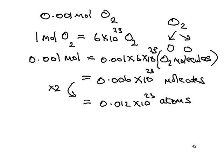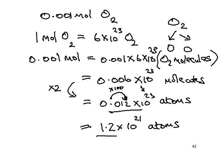I simply multiplied that figure by 2 to reflect the fact that there are two atoms in every molecule. Now we can change this into standard form. In standard form, the number must be ≥1 and <10. To move the decimal place two places to the right, I multiply by 100 to get 1.2, but divide the power of 10 by 100, making it 10²¹. So the answer is 1.2 × 10²¹ atoms.